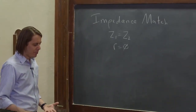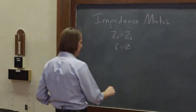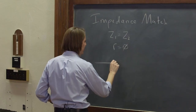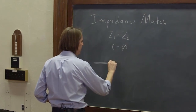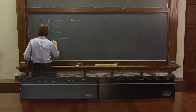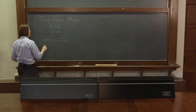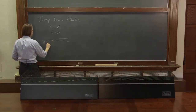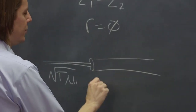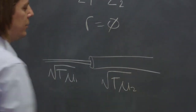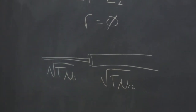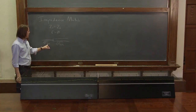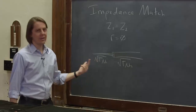The problem with impedance matching — what makes it hard — is for a string, you can't quite do it the way I built my string. I had a low impedance string Z1, which was the square root of the tension times mu1, and I had Z2, which was the square root of the tension times mu2. So this is the higher mass density; it's the higher impedance.